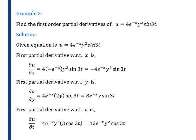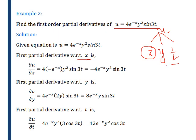Now we see example 2. Find first partial derivatives of u is equal to 4 e raised to minus x, y square, sin 3t. Here, variables x, y, and t — all three are independent variables. So we have to find first partial differentiation with respect to all three variables. First, we find the first partial derivative with respect to x. When we find differentiation with respect to x, we will keep y and t both constant.